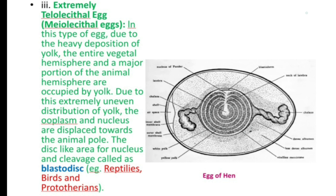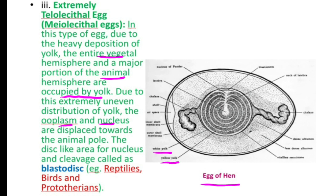Third are the extremely telolecithal eggs, also called megalecithal eggs. In this type, due to heavy deposition of yolk, the entire vegetal hemisphere and a major portion of the animal hemisphere are occupied by yolk. Due to this extremely uneven distribution, the ooplasm and nucleus are displaced towards the animal pole. The disc-like area for the nucleus and cleavage is called the blastodisc. This type of egg is found in reptiles, birds and prototherians. Here you can see the egg of a hen showing white yolk and yellow yolk, which covers the entire vegetal hemisphere and a major portion of the animal hemisphere.